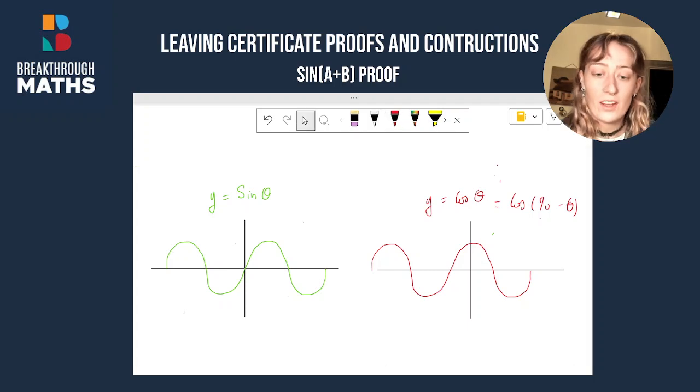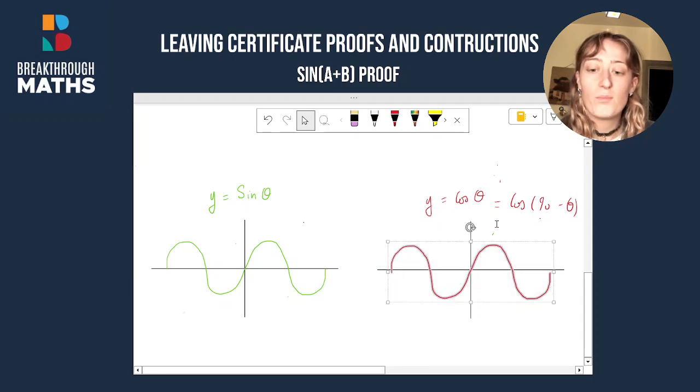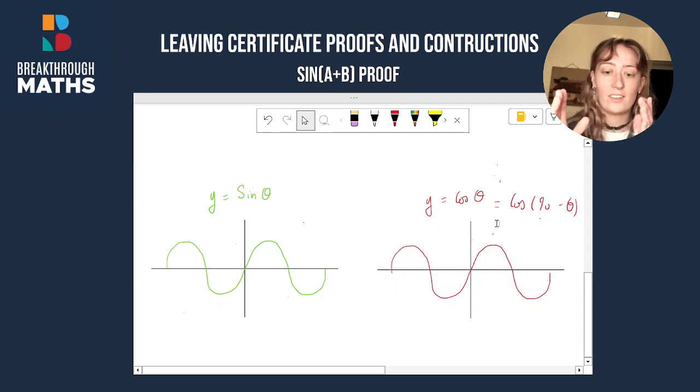And how I do that, all I do is I take my graph and I'm going to shift it 90 degrees. I'm literally just going to move it 90 degrees. Now what you'll notice is the sine graph is the exact same as the cos 90 minus theta graph. They're literally identical.